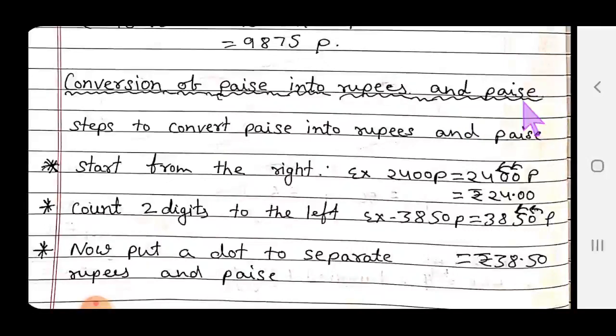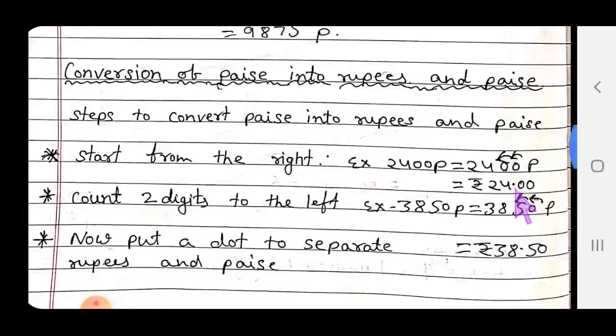Conversion of paise into rupees and paise: you need to follow some steps. Example: 24,100 paise to convert to rupees and paise. Start from the right side. Count two digits to the left. Start from the right: zero, then count 2 digits. Put a dot after counting 2 digits from right to left. This way you can easily convert into rupees and paise. The left side number will be rupees, right side number will be paise.